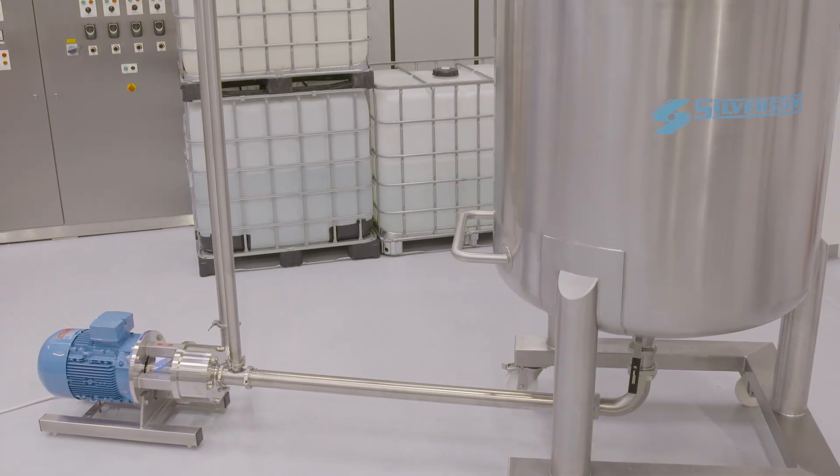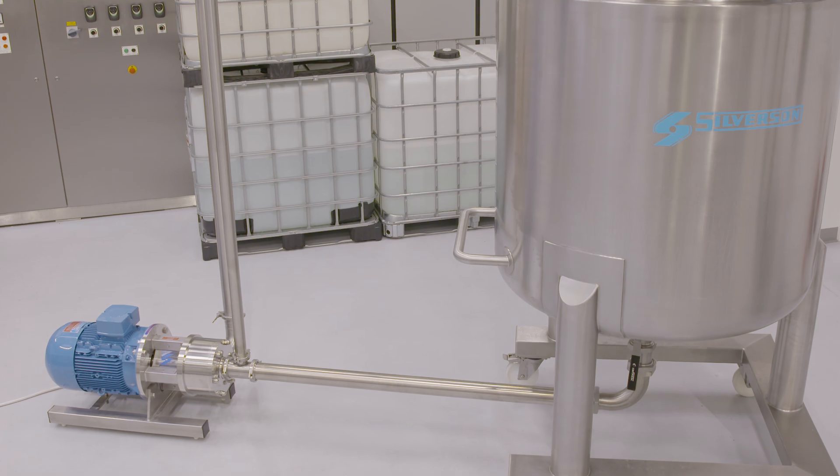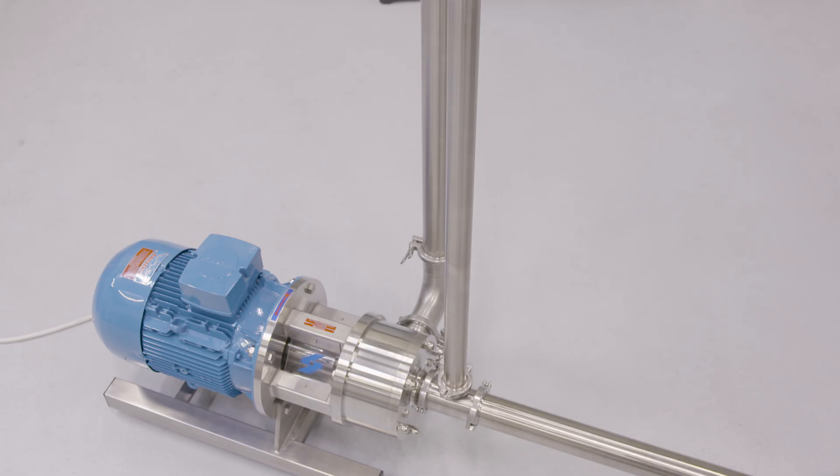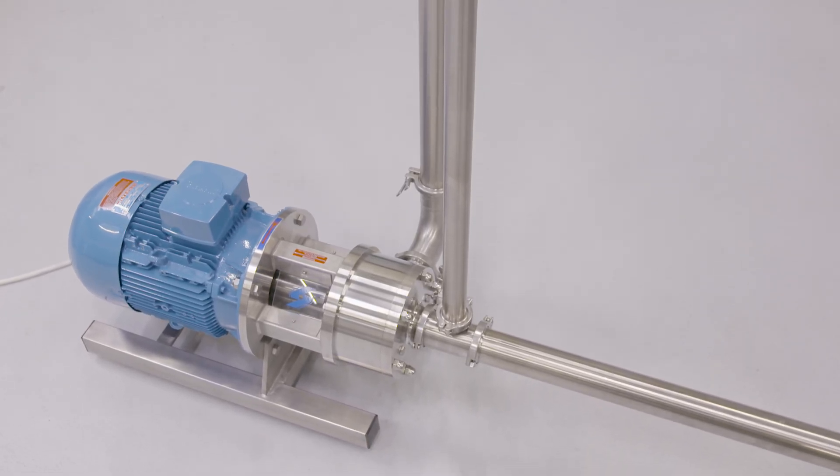One of the simplest ways to dilute high active surfactants is using a high shear Silverson inline mixer on a recirculation basis. Here's how to do it.